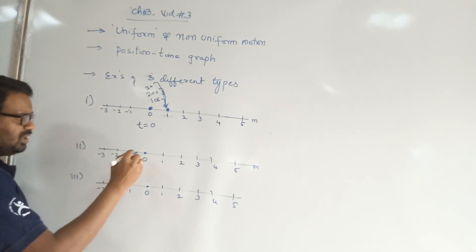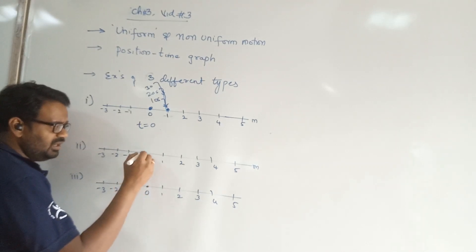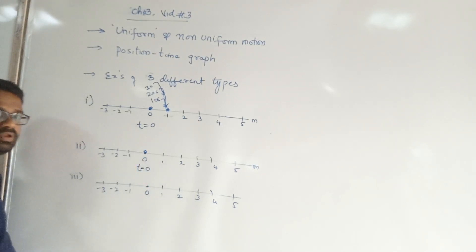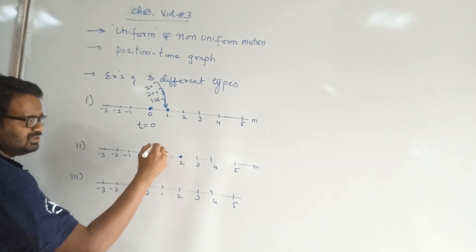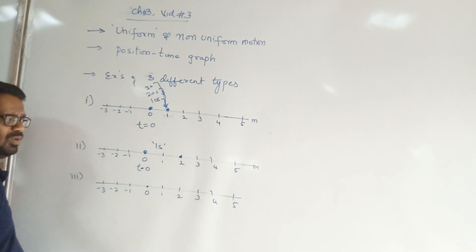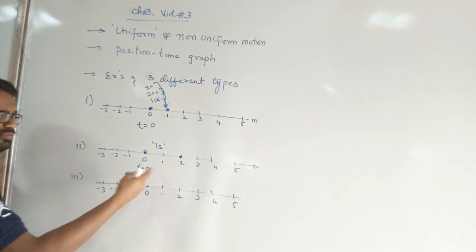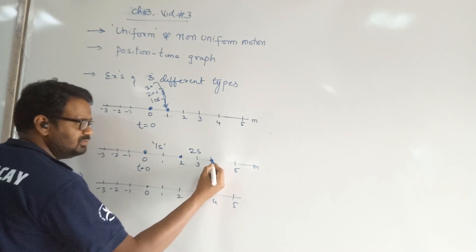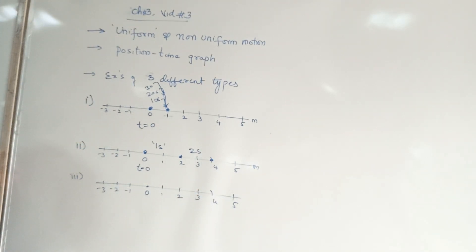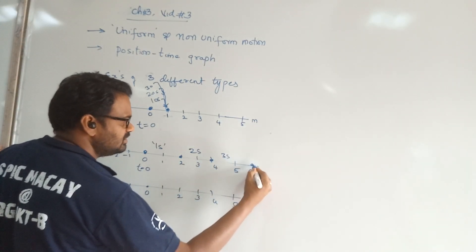Now let me talk about another object. At initial time, it is at 0 meters. After 1 second, I found it at 2 meters. After 2 seconds, I found that object at 4 meters. And after 3 seconds, I found that object at 6 meters. The object is changing its position as time progresses — this is the second example.